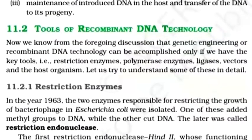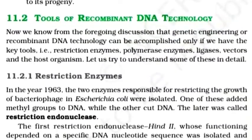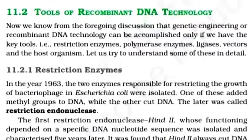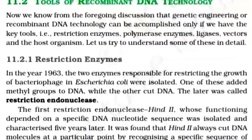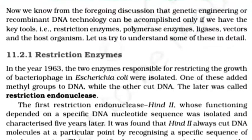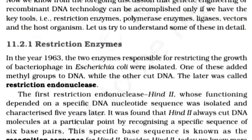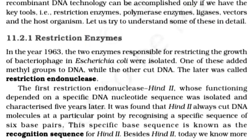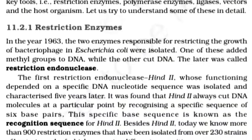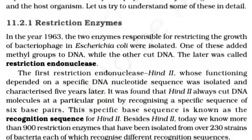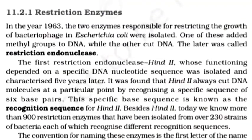Restriction enzymes: In 1963, two enzymes responsible for restricting the growth of bacteriophages in E. coli were isolated. One added a methyl group to DNA, while the other cut DNA — the latter was called restriction endonuclease. The first restriction endonuclease, HindII, whose functioning depends on a specific DNA nucleotide sequence, was isolated five years later. It was found that HindII always cut DNA at a particular point by recognizing a specific sequence of six base pairs, known as the recognition sequence for HindII.